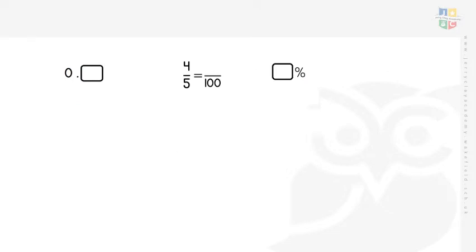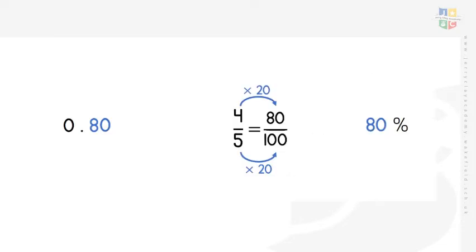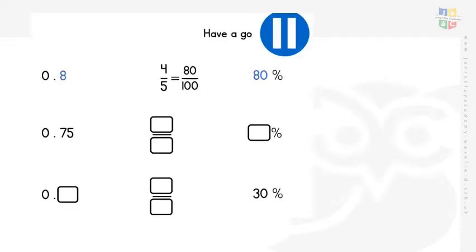Now have a go at the next question — you'll notice this one requires you to make an equivalent fraction for the middle one. Pause if you need to. For four fifths, to turn five into 100 you multiply by 20, and do the same to the numerator: 4 × 20 = 80, giving 80 over 100. As a decimal that's 80 hundredths — 0.80, or 0.8. As a percentage, that's 80%. Great work, Year 6 — now try the two questions below.